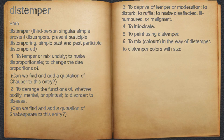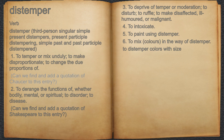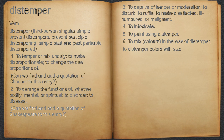Distemper. Verb 1. To temper or mix unduly; to make disproportionate; to change the due proportions of. For example, can we find and add a quotation of Chaucer to this entry? 2. To derange the functions of, whether bodily, mental, or spiritual; to disorder; to disease. For example, can we find and add a quotation of Shakespeare to this entry?